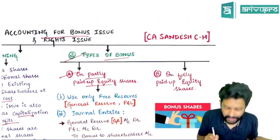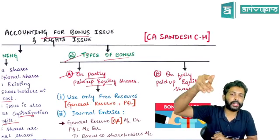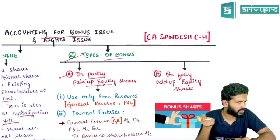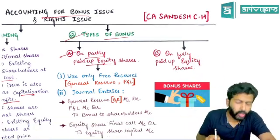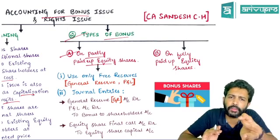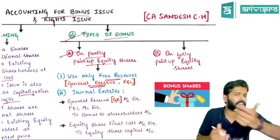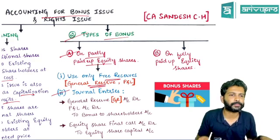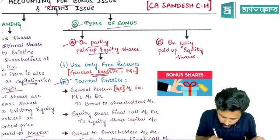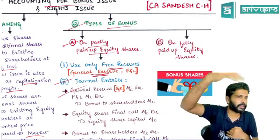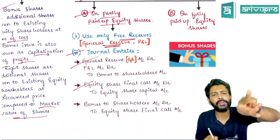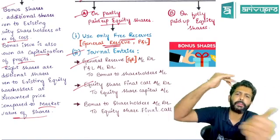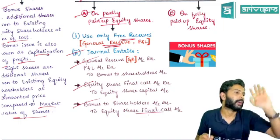Can you give bonus shares on partly paid up shares? No — first you need to convert. Two options are available: either convert the shares or make the final call and receive the final call amount. If converting, only free reserves can be utilized — generally general reserve and P&L. The journal entry is: General Reserve or P&L A/c debit to Bonus to Shareholders A/c, then Equity Share Final Call debit to Equity Share Capital. Then close both dummy accounts: Bonus to Shareholders A/c debit to Equity Share Final Call.